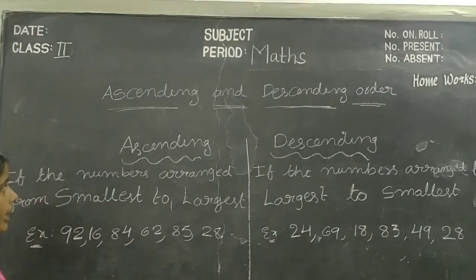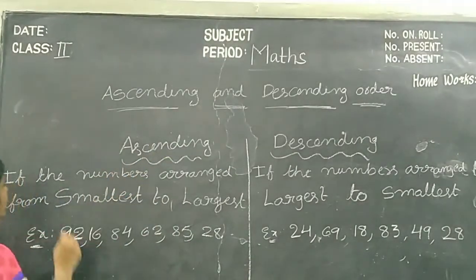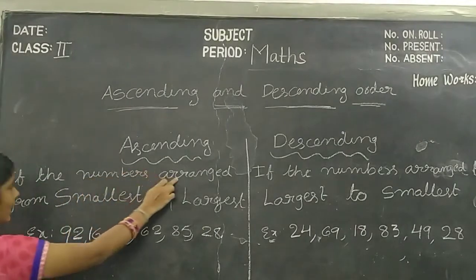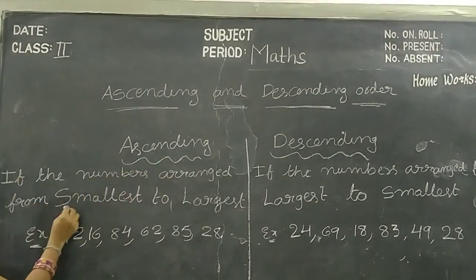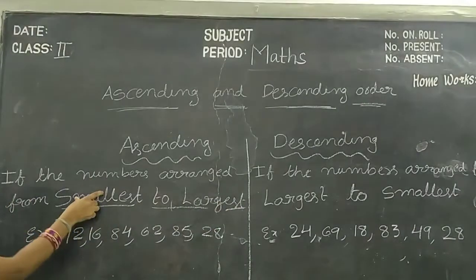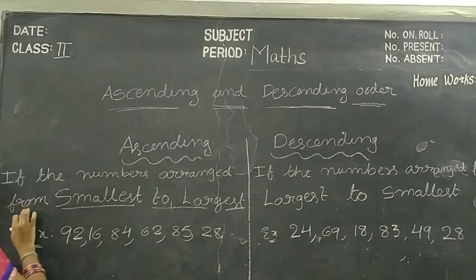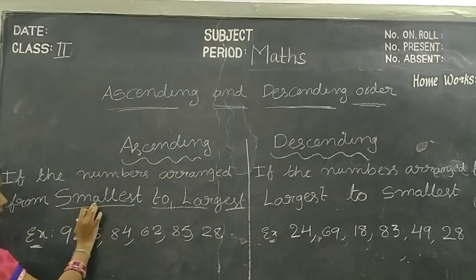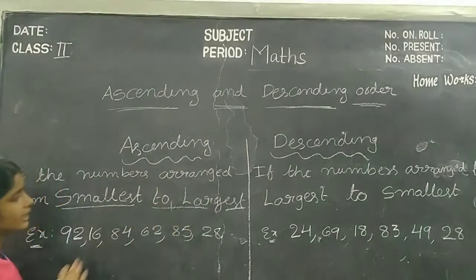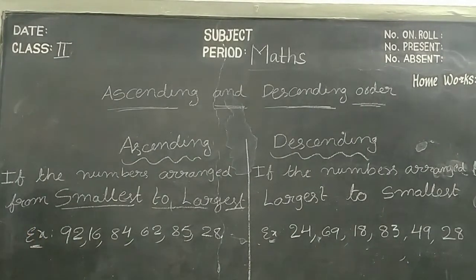Okay children, listen carefully. Ascending Order — if the numbers are arranged from smallest to biggest, smallest to largest, it is called Ascending Order. Once again, if the numbers are arranged from smallest to largest, it is called Ascending Order. Okay children, see the example.